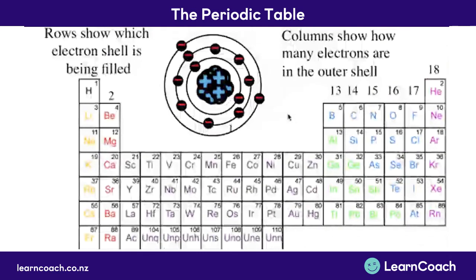For example: how many electrons are in group 16? It would be six. How many are in group 17? It would be seven. How many are in group 2? It would be two.